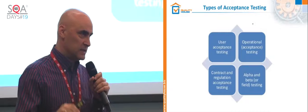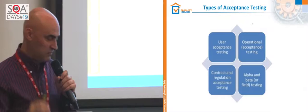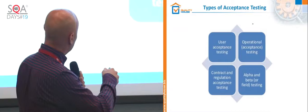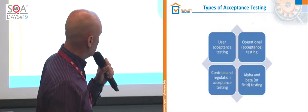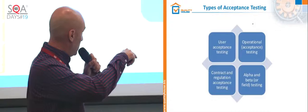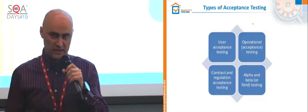We're talking about four different types of acceptance testing. The most popular one, because most of you are involved in software development, will be the user acceptance testing. You can also have an operational acceptance testing. Then you have contract and regulation acceptance testing. And most of you know about beta and field testing as well.